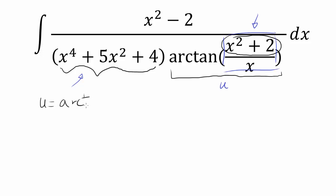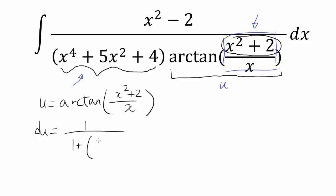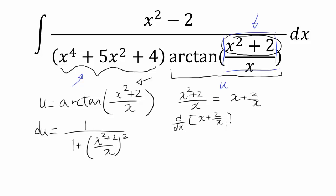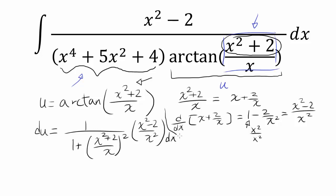Let's let u be arctangent of (x squared plus 2) over x and see if differentiating is going to benefit us. So what's du? Well, du is 1 over 1 plus (x squared plus 2 over x) squared, multiplied by the derivative of (x squared plus 2) over x. When you differentiate x squared plus 2 over x — which is the same as x plus 2 over x — you get 1 minus 2 over x squared, also known as (x squared minus 2) over x squared, because 1 is x squared over x squared. So we know we have to multiply by x squared minus 2 over x squared.